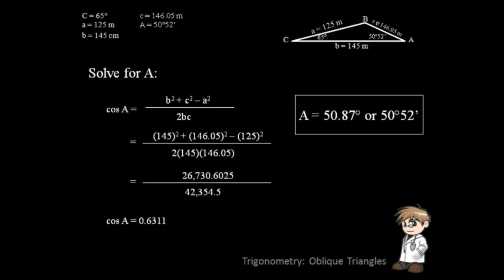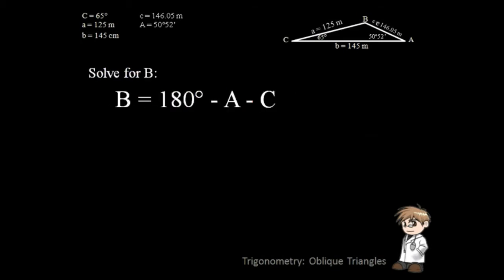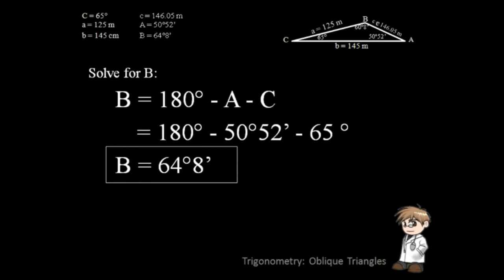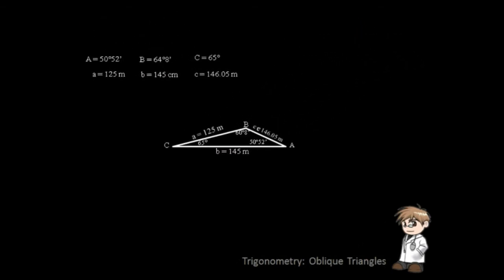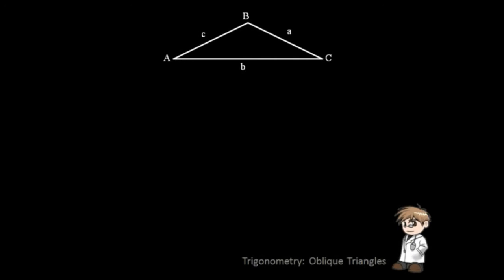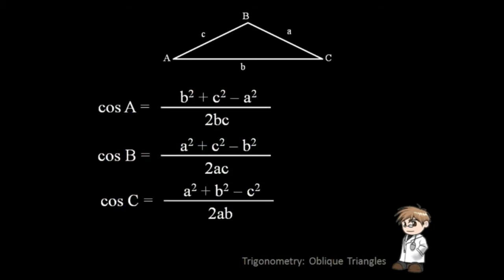Now that we have angle A and angle C, let us solve for angle B by using the simple equation. So this is how you do it using the Law of Cosine. In solving the third angle, you don't have to use the Law of Cosine — simply subtract the sum of the two angles from 180 degrees.